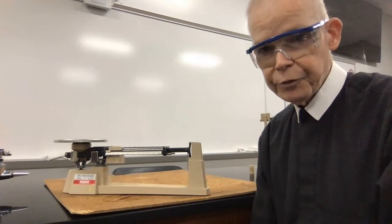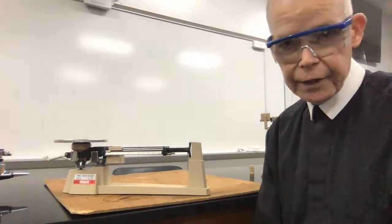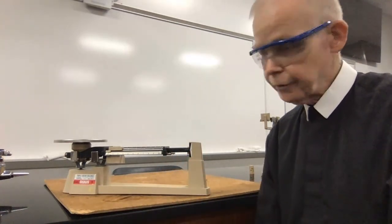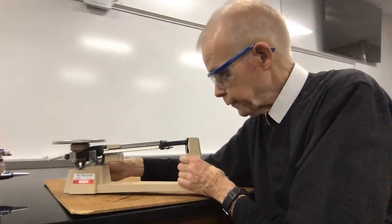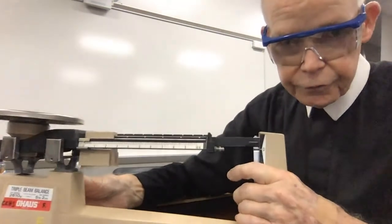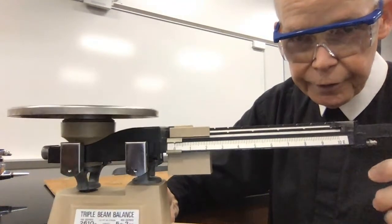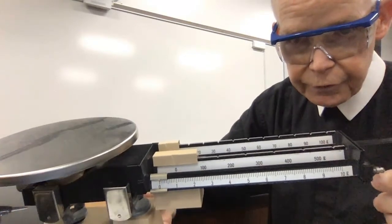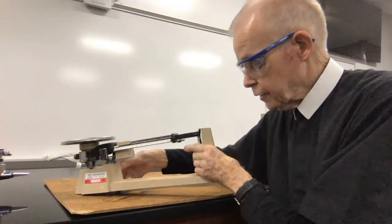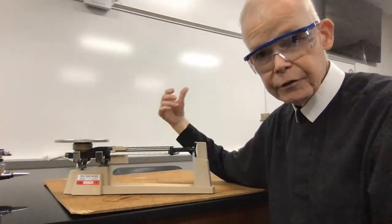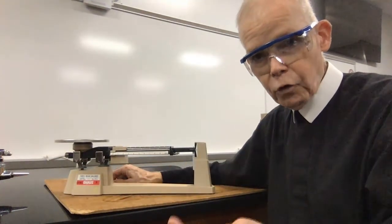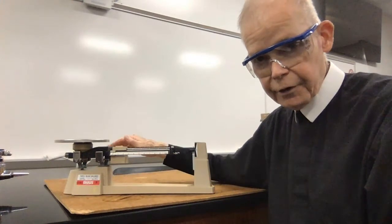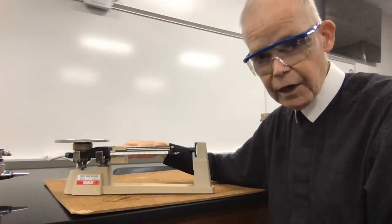The second type of triple beam balance that we have is one that has a much higher capacity, can take heavier masses, and give us good readings on those. I'll bring it up a little closer for you. It works the same way. If I put an object on the other side, there's a pivot system in the middle, there's a pan, and then there's counterweights that move across the beams to indicate how heavy something would be. If I have an object that is so heavy that the triple beam balance I first showed you can't hold it and get it balanced, then I have to switch over to this type of balance. This has the ability to take higher masses.